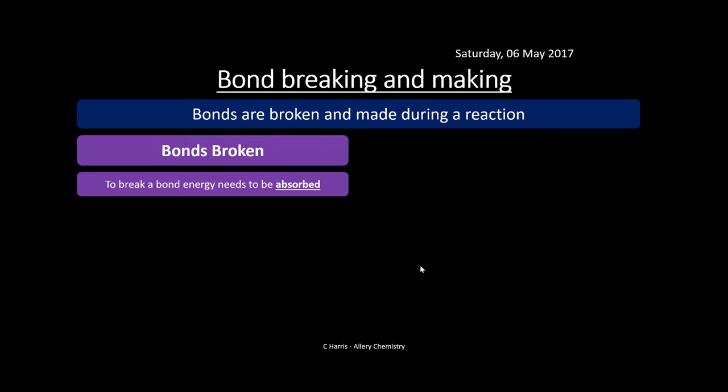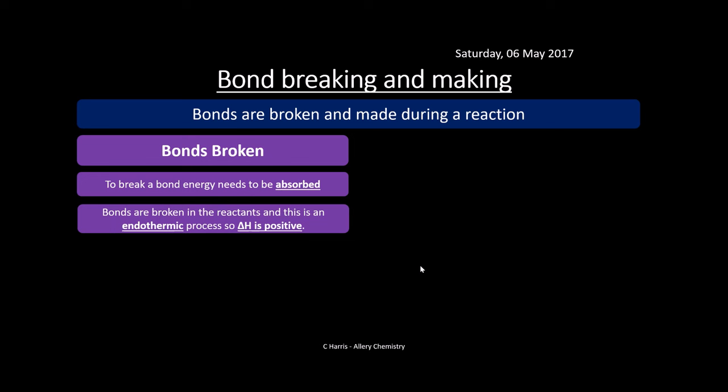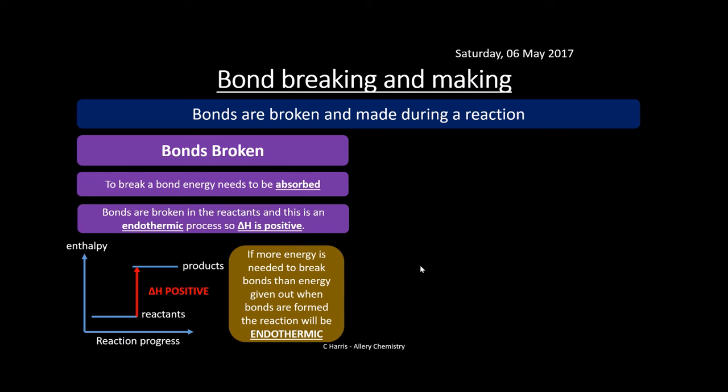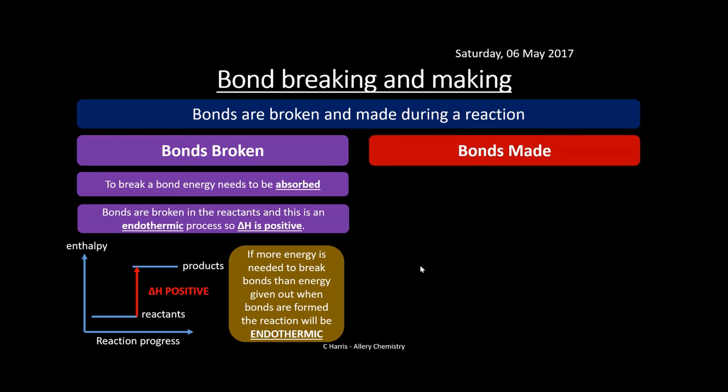Bond breaking and making — bonds are broken and made during a reaction. When we break bonds, we need energy to do that. This is energy being absorbed — breaking bonds is an endothermic process, and delta H is always positive when we're breaking bonds. If more energy is needed to break the bonds than energy given out when bonds are reformed to make the products, the reaction will be endothermic.